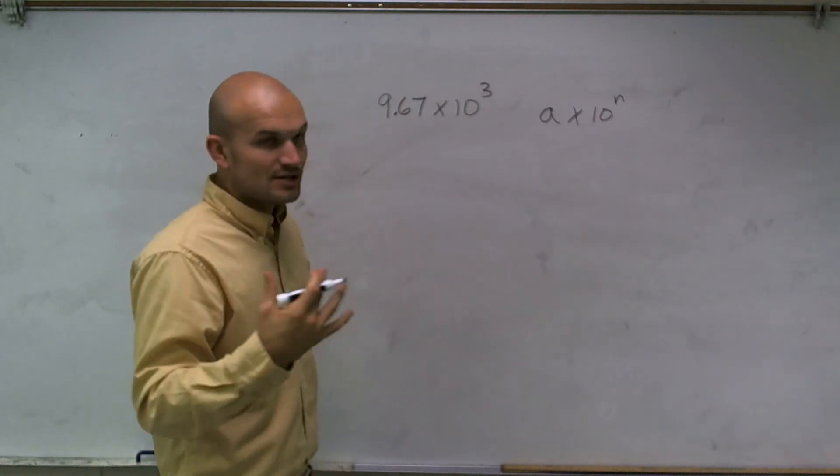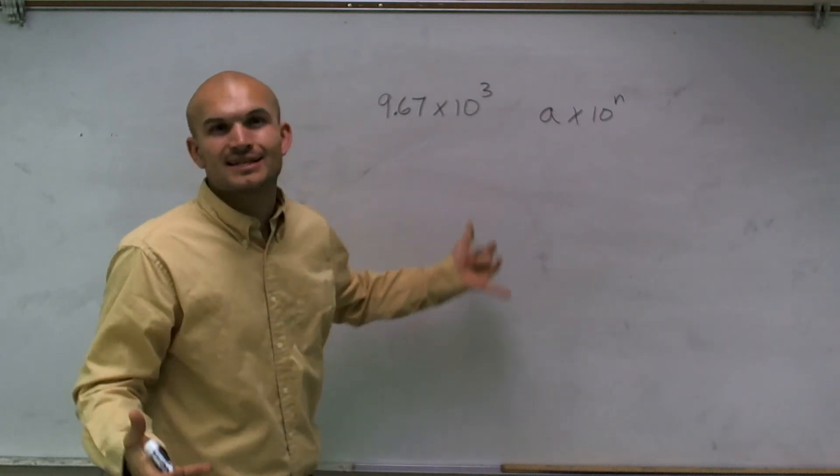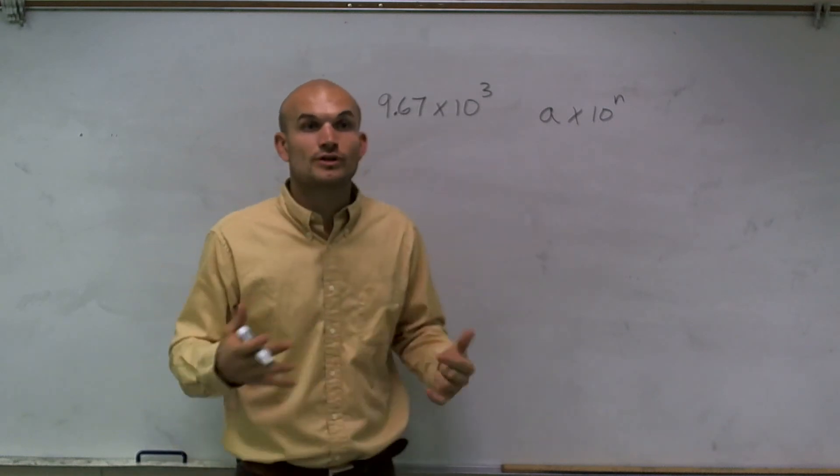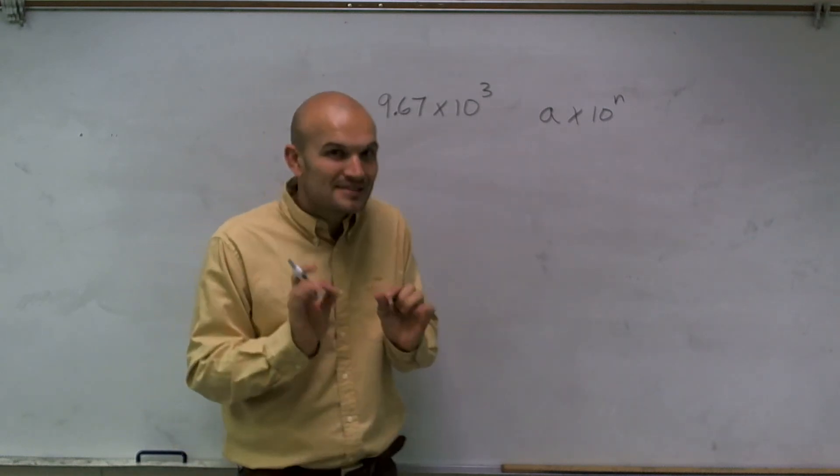So let's understand how a times 10 to the n is going to affect us in a number, because we use scientific notation to help us write really large numbers and really small numbers.